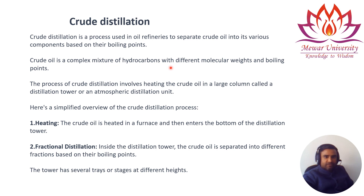Crude oil contains thousands of molecules of hydrogen and carbon of different molecular weights and boiling points. This is distilled in the refinery and we obtain different products based on their boiling point ranges. The process of crude distillation involves heating the crude oil in a large column called the distillation tower, also called an atmospheric distillation unit.